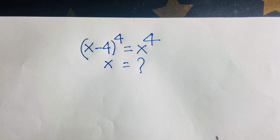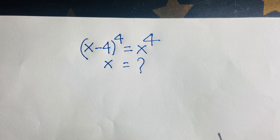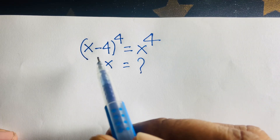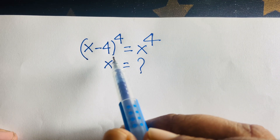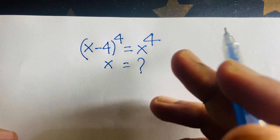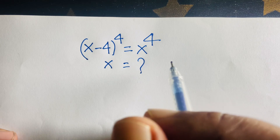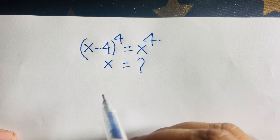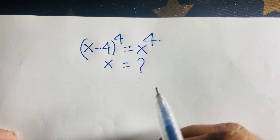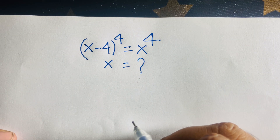Hello everyone. In this video we have solved this interesting math question. This question is: x minus 4, whole to the power 4, is equal to x to the power 4. We will find out what is the value of x in this exponential equation.